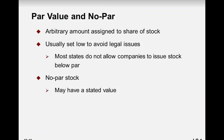Par value is just an arbitrary amount assigned to the share of stock — it's usually set really low to help avoid legal issues. Most states do not allow companies to issue stock below par, so companies set par at pennies or fractions of a penny to avoid that. The difference between par and the issue price is recorded in the additional paid-in capital account. No par stock may have a stated value, which behaves just like par value.